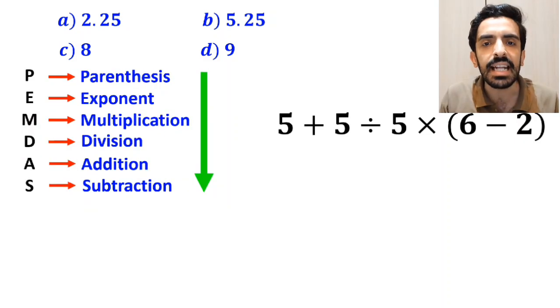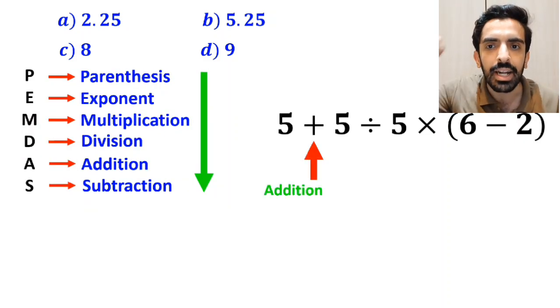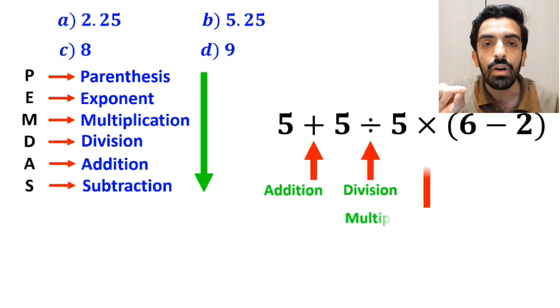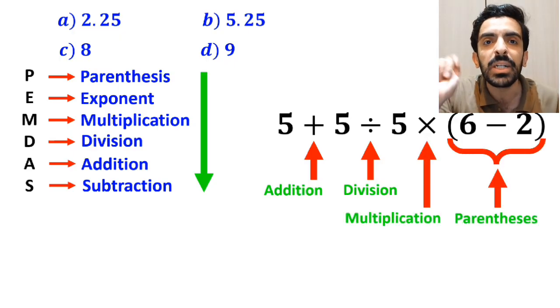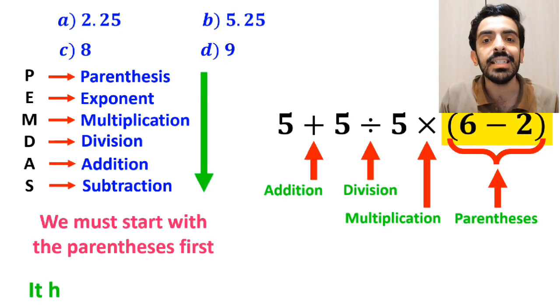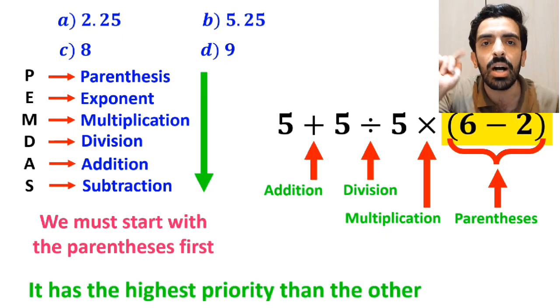Alright, as you can see in the image, in this expression, first we have an addition sign, then a division sign, followed by a multiplication, and finally parenthesis. We must start with the parenthesis first because it has the highest priority than the other operations.